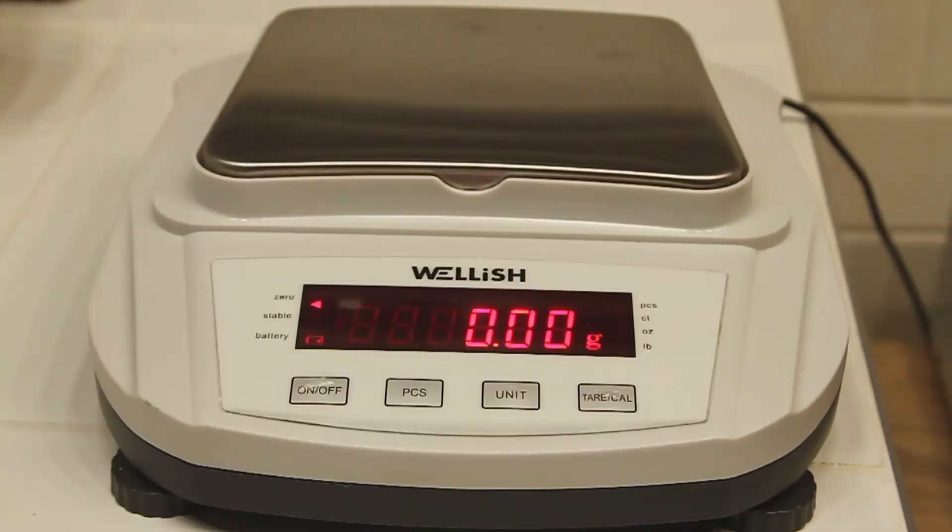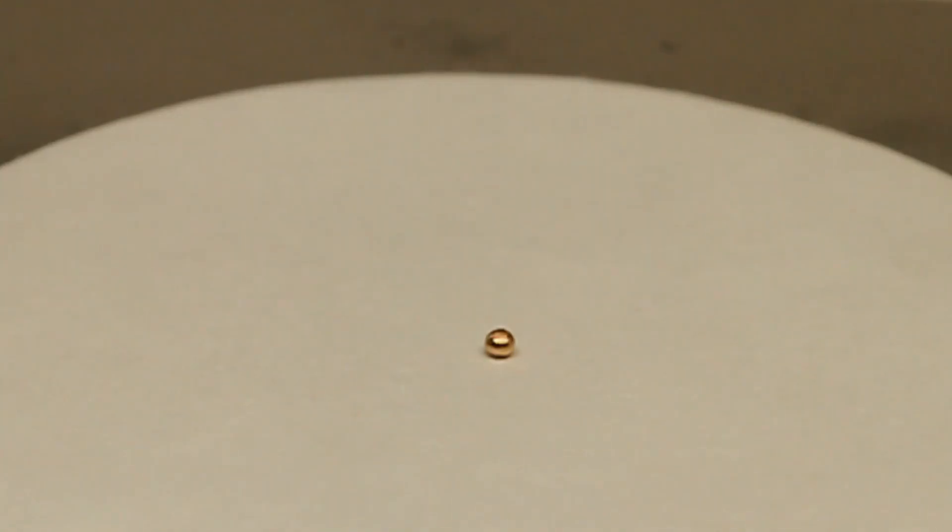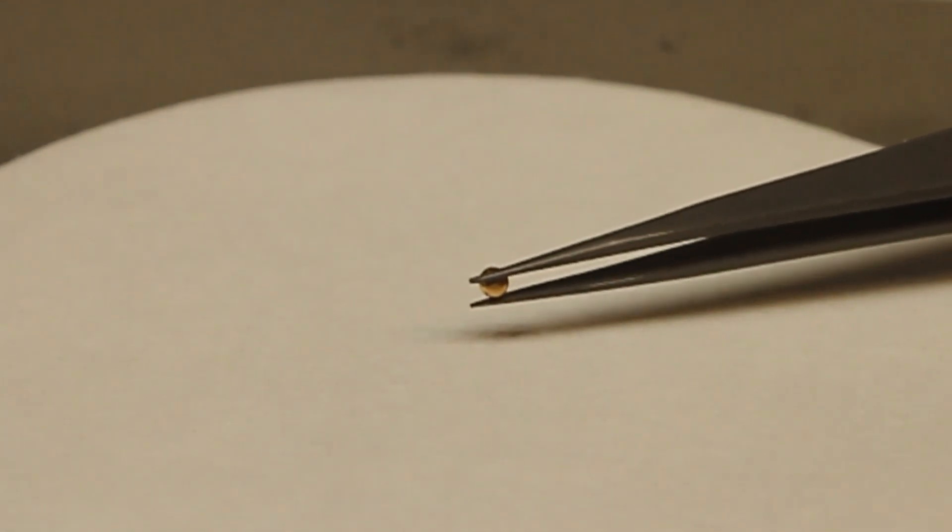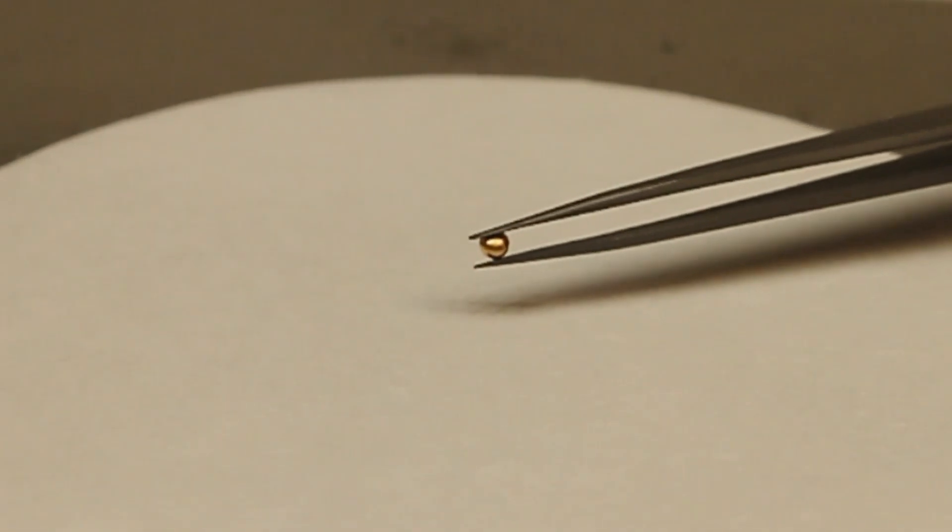And then here we have a final weight, 0.18 grams. I was expecting, you know, 0.25 or so, quarter of a gram. Better look at the piece. And we'll throw it in with the rest of our gold and we'll use it when time is right. Thank you very much for watching.